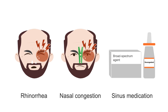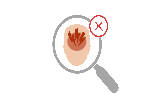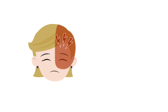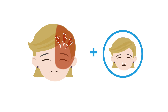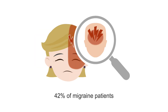Some primary headache syndromes have rhinorrhea-like symptoms. The complaint of nasal congestion as well as the patient noting improvement with sinus medication often leads to an incorrect diagnosis of sinus headache. More than 50% of patients who have migraine also have nasal symptomatology. The American Migraine Study 2 demonstrated that 42% of patients with all the criteria of migraine had been previously diagnosed with sinus headache.